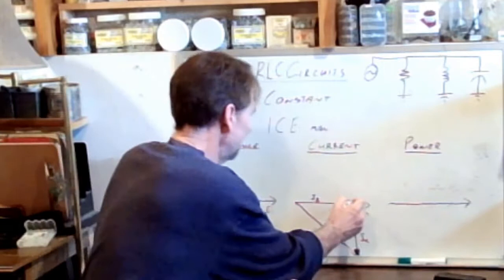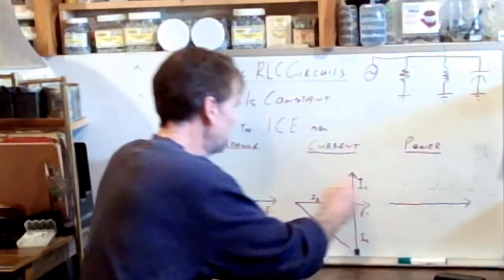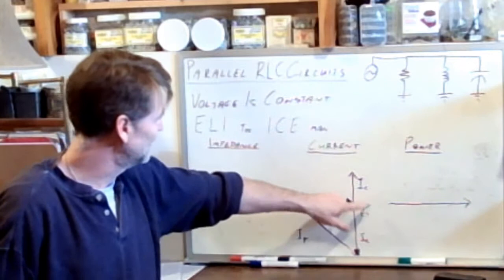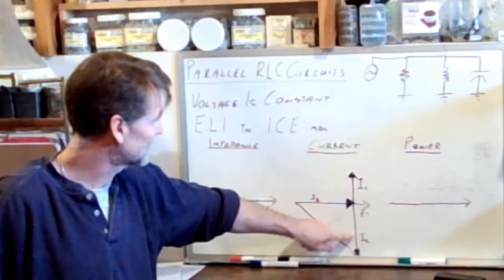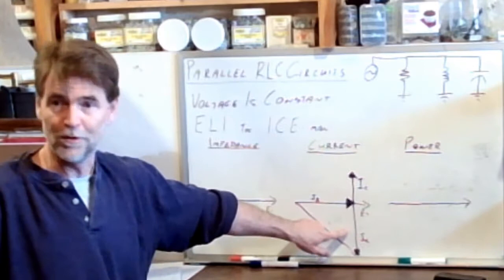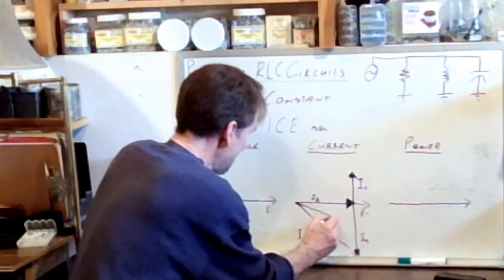What they do is they provide what we call power factor correction. So there is current circulating through those capacitors, I see. There's current circulating through those capacitors which is leading. Sorry, I better close this in. That's a current vector which is leading the voltage, which is out of phase by the current through the inductor by 180 degrees. Canceling out those two to whatever extent they cancel out and the result is an IT that is somewhere in that neighborhood.